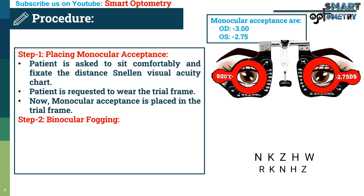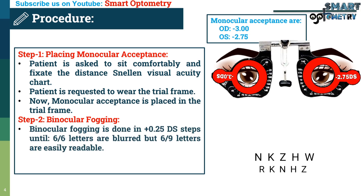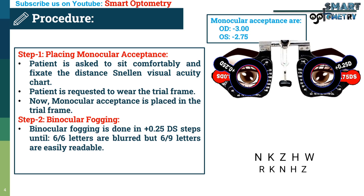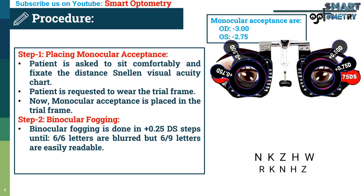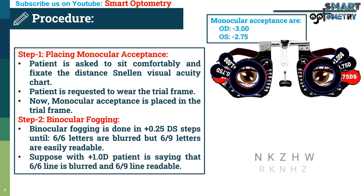Step two — binocular fogging: fogging is done in plus 0.25 diopter steps until the 6/6 letters are blurred but the 6/9 letters are easily readable. Suppose with plus 1 diopter, the patient says that the 6/6 line is blurred and the 6/9 line is readable.